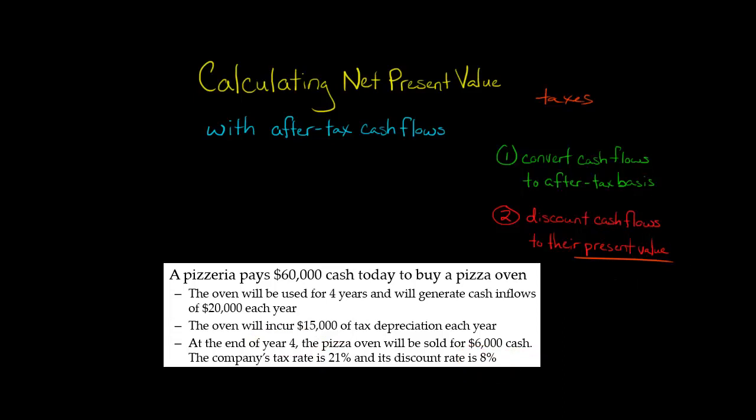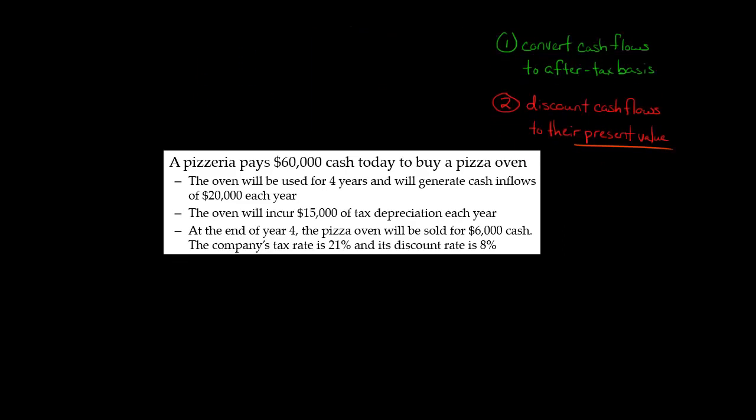Let's work this problem. In period zero, which is today, we're going to have a negative $60,000 cash flow. We're going to have a cash outflow today. We're not going to have to discount that or worry about after-tax or anything like that. So let's move now to period one.